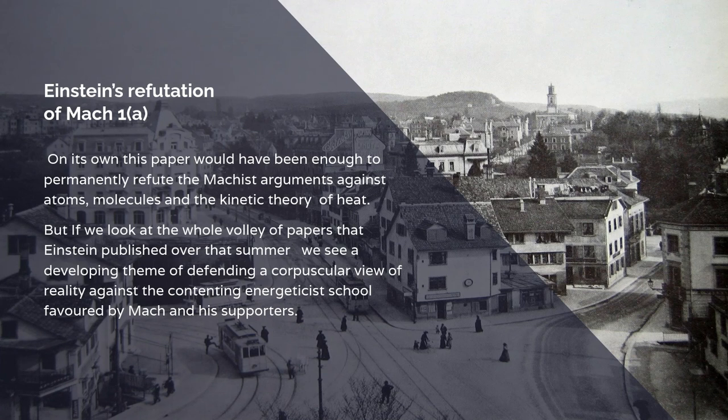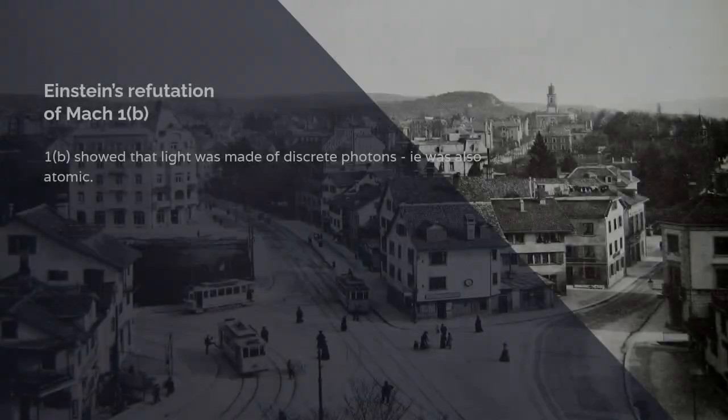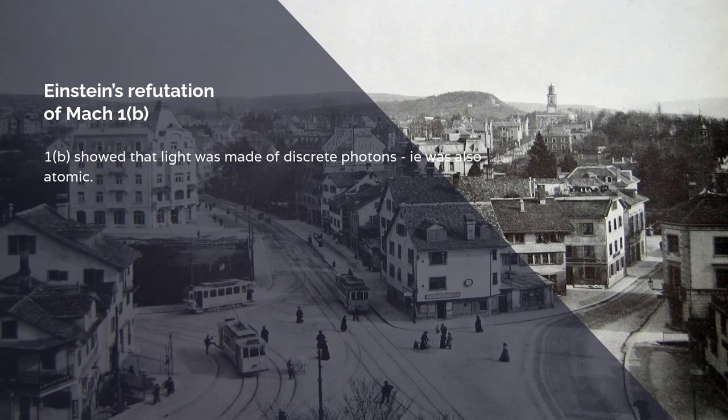So Einstein, on his own, this would have been enough to refute Mach and establish Boltzmann as right. But if we look at the whole volley of papers that Einstein published over the summer, you see he was developing a defending a corpuscular view of reality against what was known as the energeticist school, favoured by Mach and his supporters. His second paper showed that light was made of photons, i.e. light was also atomic. So the atomic theory applied not only to gases and liquids but also applied to light.